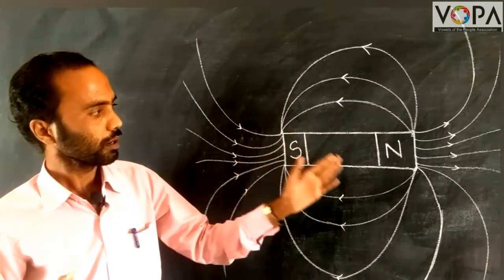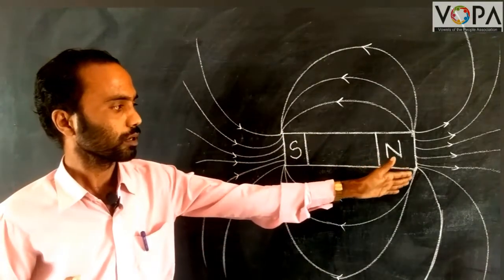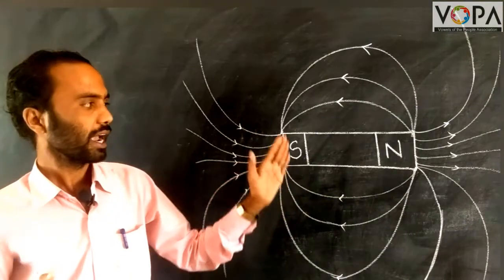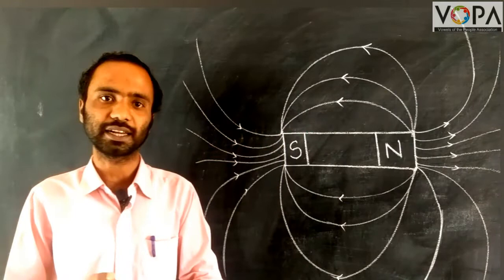There are a number of magnetic lines of force which run from north pole to south pole, and because of these magnetic lines of force, a magnetic field is created.